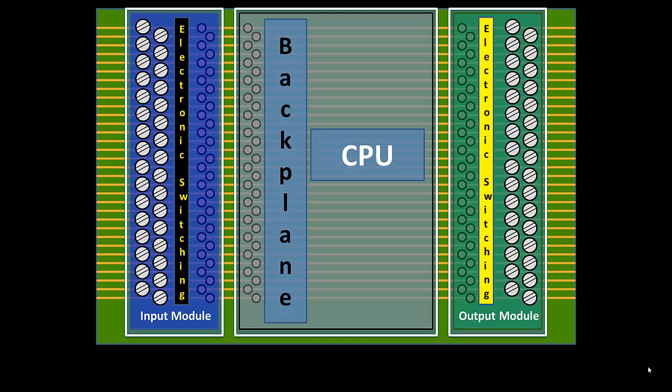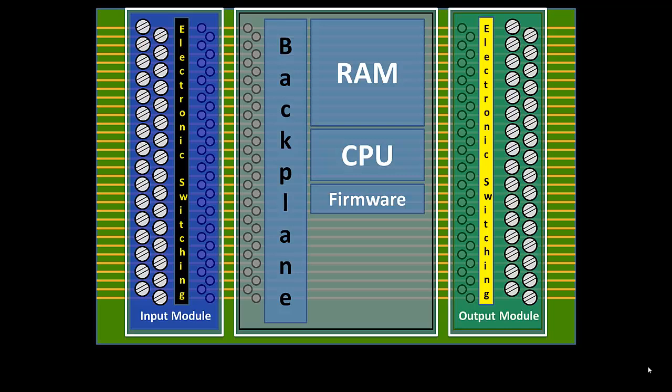Of course we need a brain — a central processing unit. The CPU is going to need RAM, random access memory, to store its list of instructions and to store the results from reading the input module. The processor will activate the input module, take the voltage states off the backplane, and store them as 0s and 1s in memory as a snapshot of the state of the input devices. The CPU also needs a guidebook to interpret instructions and retrieve features — we call this firmware.